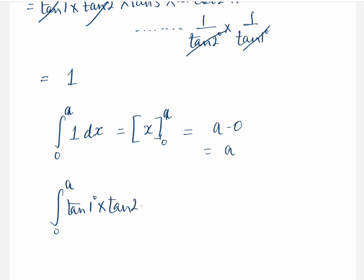So your answer is ∫₀ᵃ (tan1° × tan2° × ... × tan89°) dx equals a. Hmm, pretty good question. Cool, have a good day.